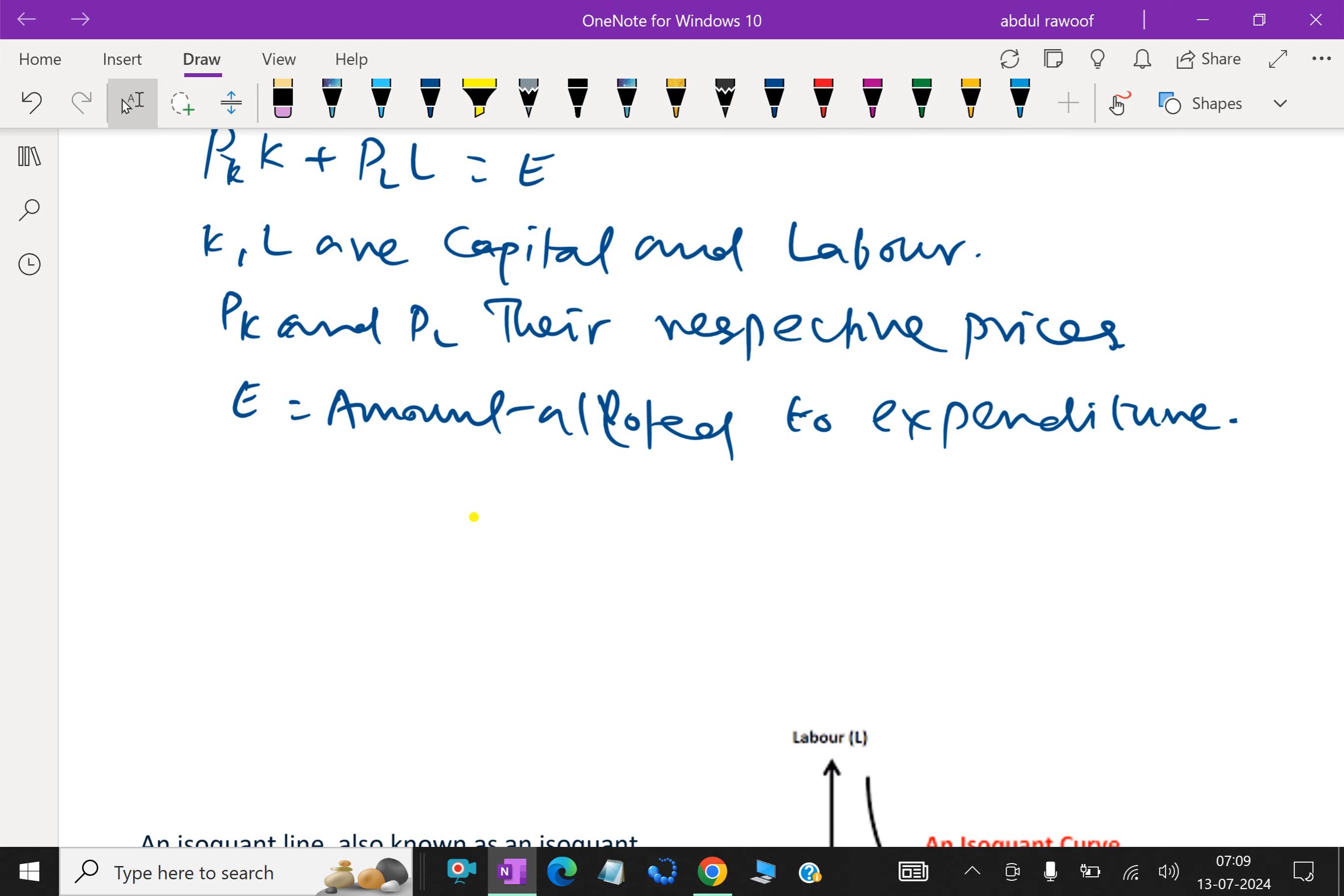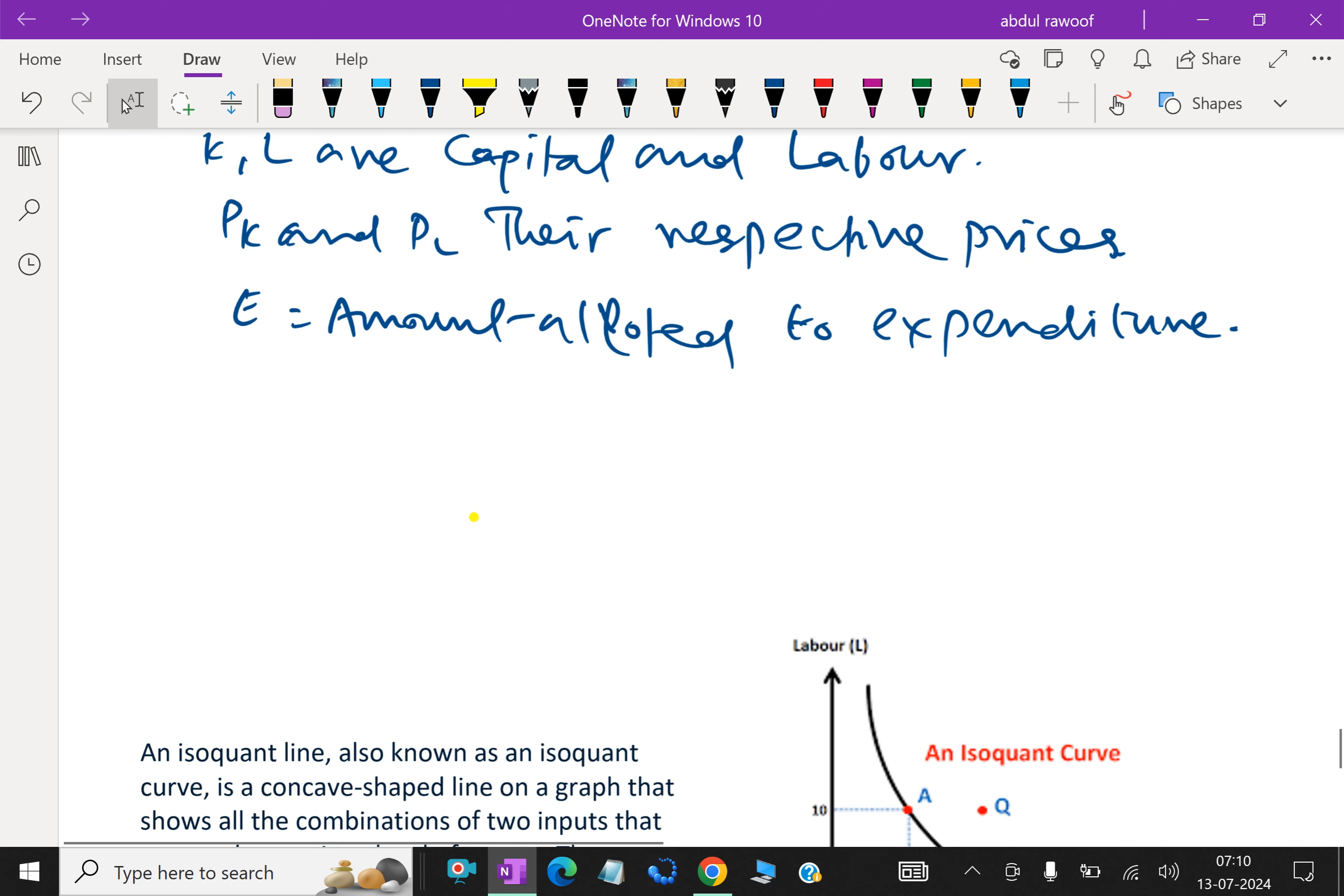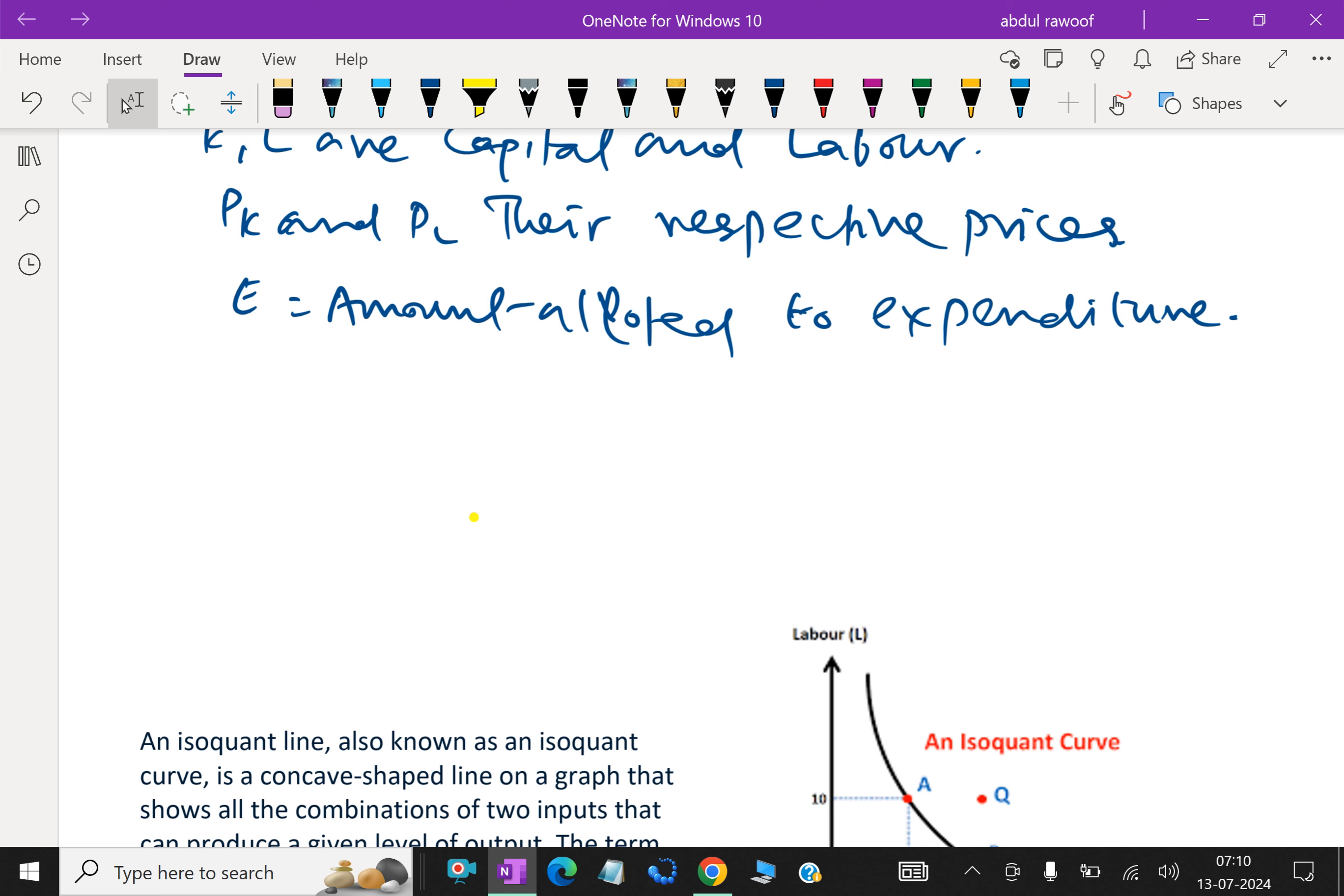Now in isocost analysis the individual prices and expenditure are initially held constant, only the different combination of inputs are allowed to change. The function can then be graphed by expressing one variable in terms of the other. From the equation pk into k plus pl into l equal to e, we can find k value, that is k equal e minus pl into l over pk.